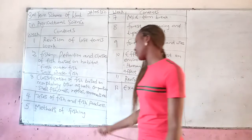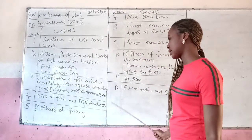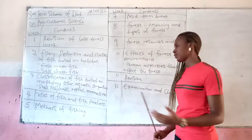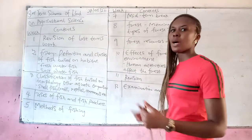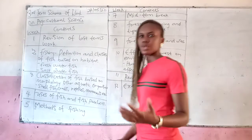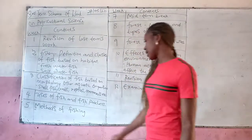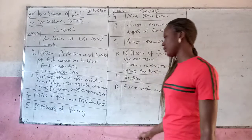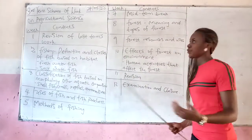Week 4, we have the uses of fish and fish products — the fishes that we use, what we get from them and what we also use them to do. Week 5 says Methods of Fishing — those ways to catch fish.